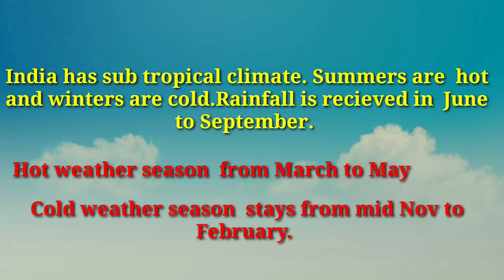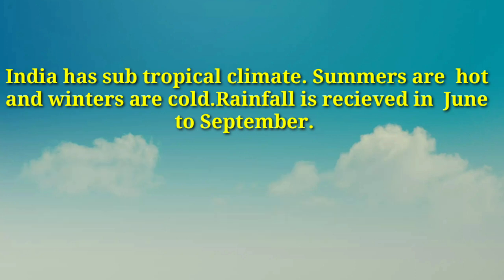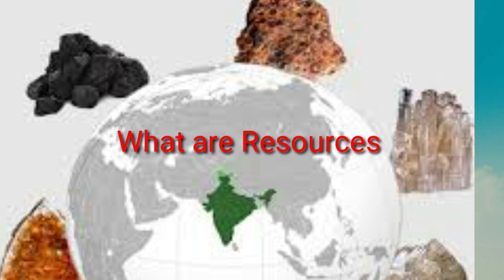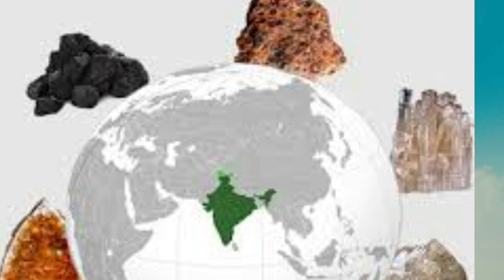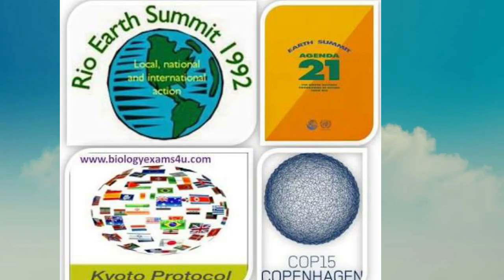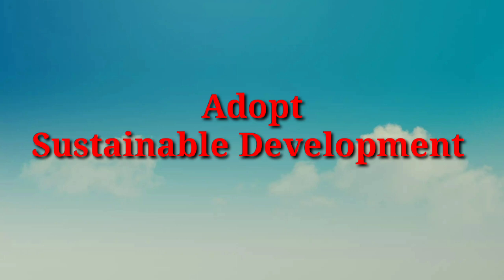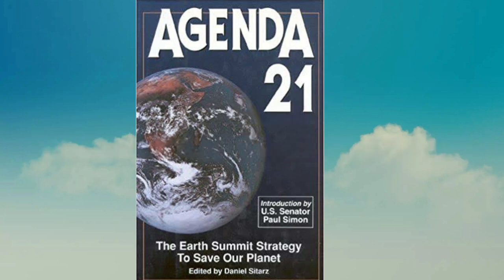The hot weather season lasts from March to May and the cold weather season from mid-November to February. Let's move on to the resources of India. Natural elements become resources when man modifies them to be more useful and valuable using intelligence, skill and technical knowledge. Resource conservation is very important because resources are limited and being used rapidly. Sustainable development means saving resources for future generations without harming the environment. This philosophy was adopted in Agenda 21 at the Rio de Janeiro Summit held in 1992 in Brazil.